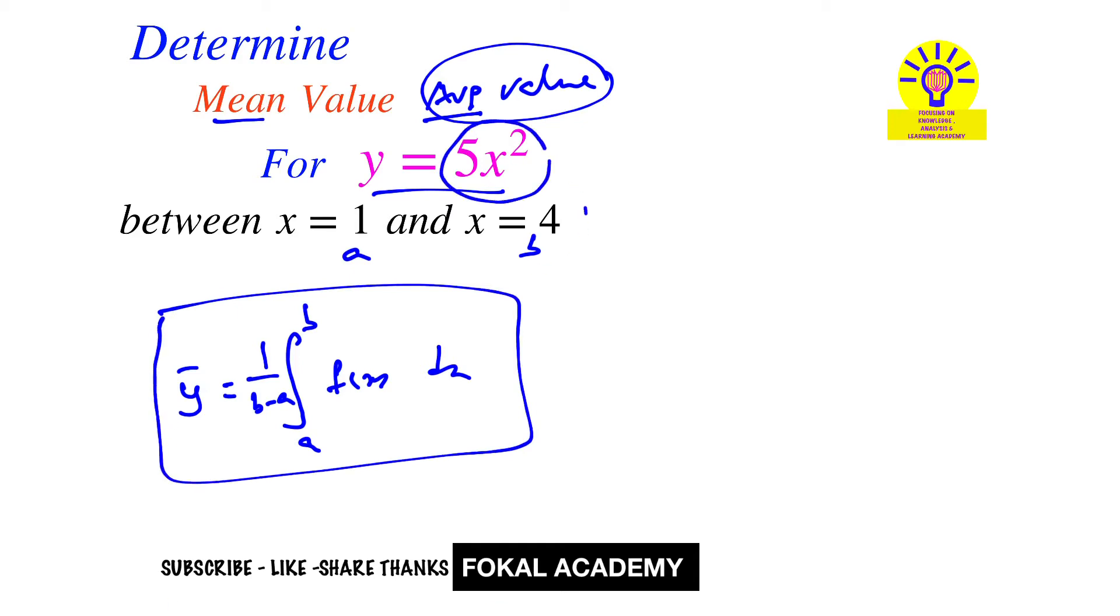This is the f of x function, so for this function we are going to get the average value or mean value. Now substitute here: that's equal to 1 by b minus a, which means 4 minus 1, integral of 1 to 4, so f of x is given as 5x squared dx.